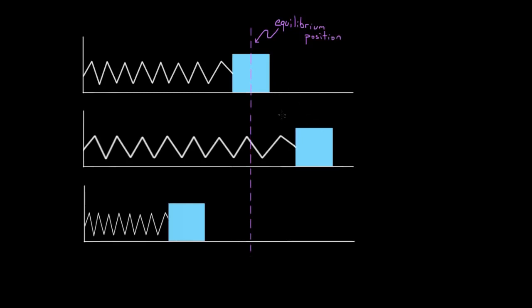We saw that for a mass oscillating on a spring, there's a certain amplitude — that's the maximum displacement from equilibrium — and there's also a certain period, which is the time it takes for this process to reset, or the time it takes for the mass to go through an entire cycle. But what do these things depend on? We know the definitions, but what determines them?